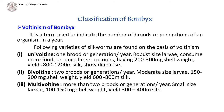Bivoltine: organisms having two broods or two generations per year. Their larvae are comparatively of moderate size. Shell weight of the cocoon is 150 to 200 mg. They yield 600 to 800 meters of silk.